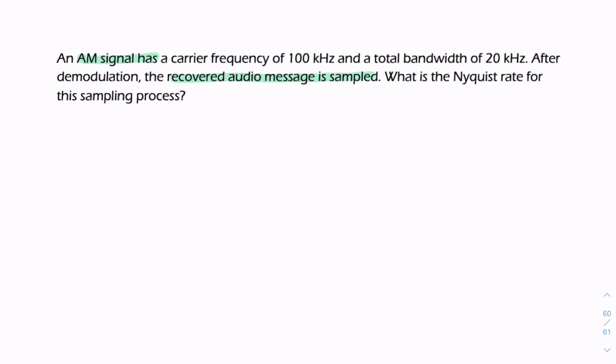We need to imagine what the signal looks like. We have an AM signal centered at 100 kHz with a bandwidth of 20 kHz. The carrier frequency is 100 kHz.